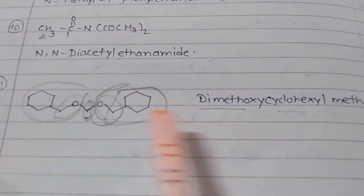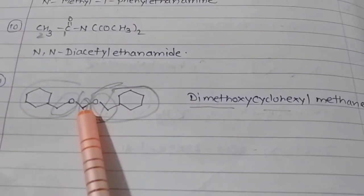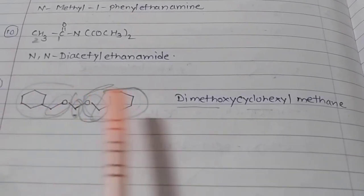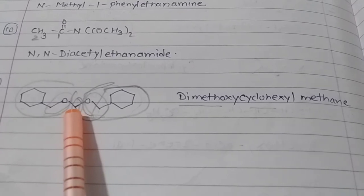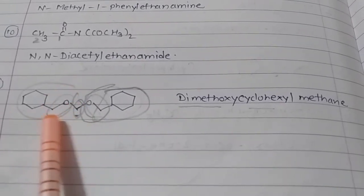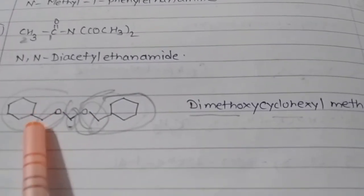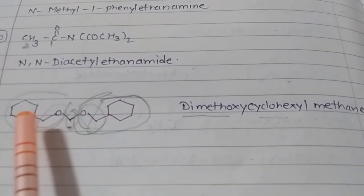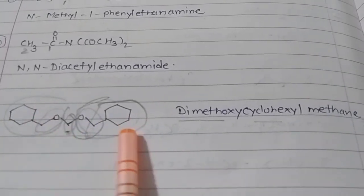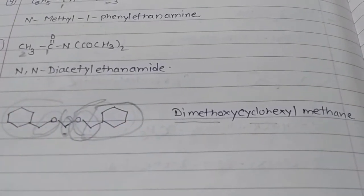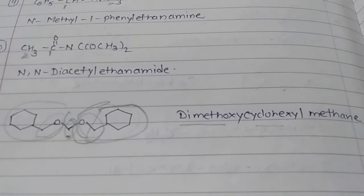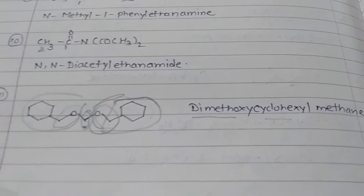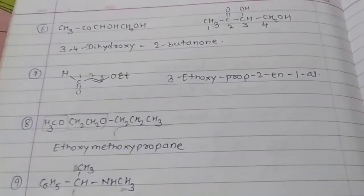The last example: the middle carbon has two substituents which are smaller rings — methoxy groups. These two smaller such rings are there, therefore di-methoxy. Then cyclohexyl for the ring, and methane for the middle carbon. The name is di-methoxy-cyclohexyl-methane. That's all. Thank you guys.